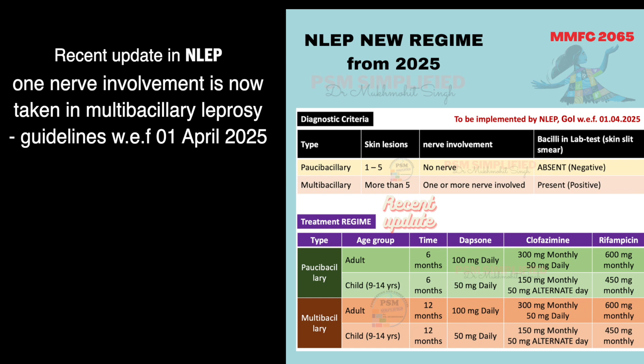As far as treatment guidelines are concerned, we can have paucibacillary and multibacillary. There are three drugs: rifampicin, clofazimine, and dapsone. These are given as supervised or non-supervised doses. In paucibacillary it is given for six months, and in multibacillary it is given for 12 months.